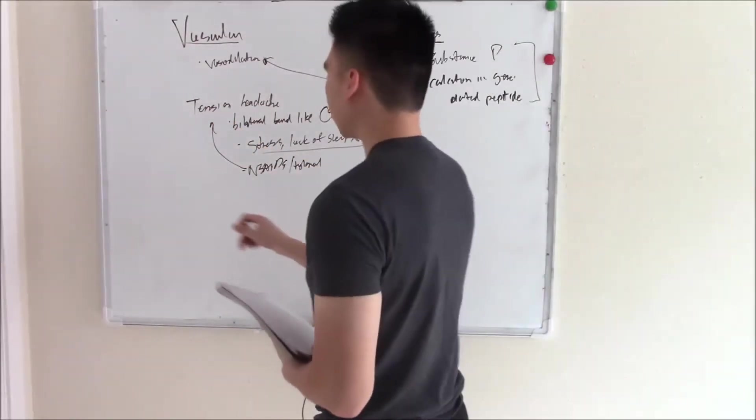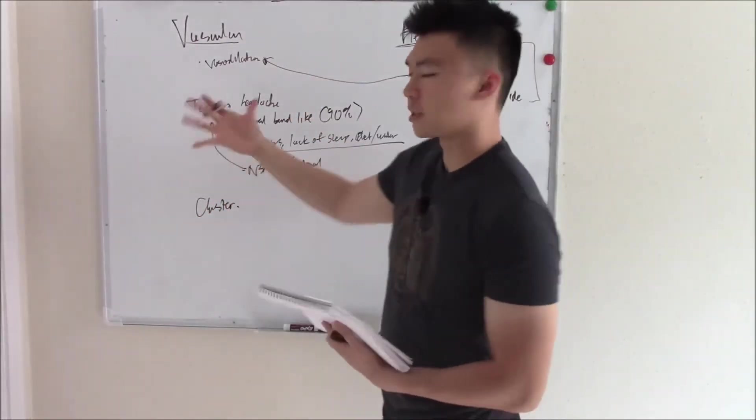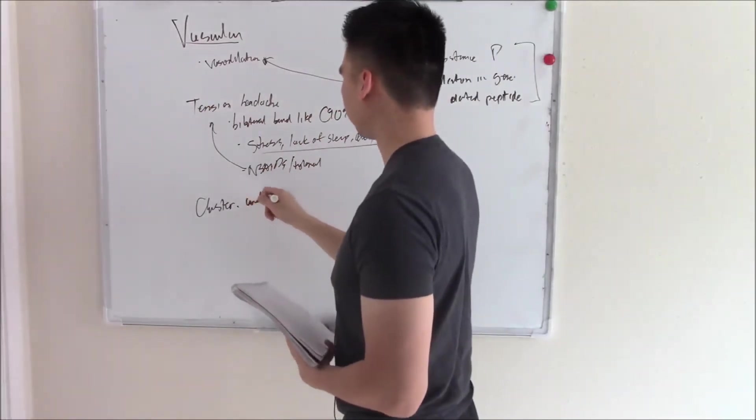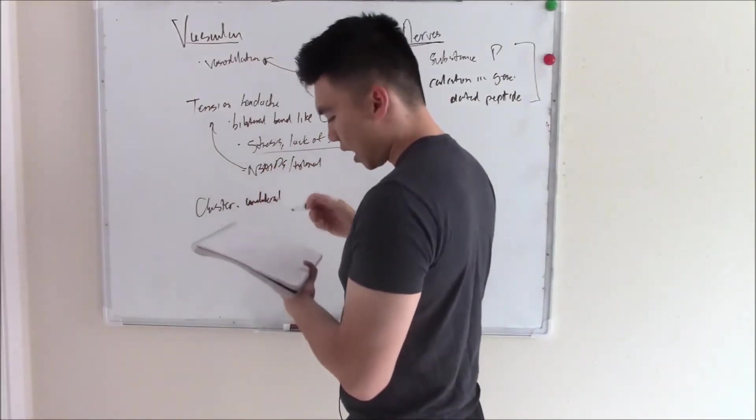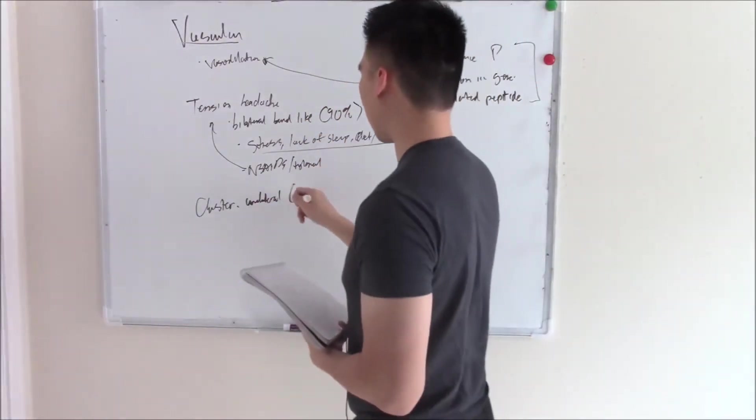Another type of headache you can see is called cluster headaches. And whereas the common tension headaches were bilateral, cluster headaches are unilateral. And they usually affect around the eye area.